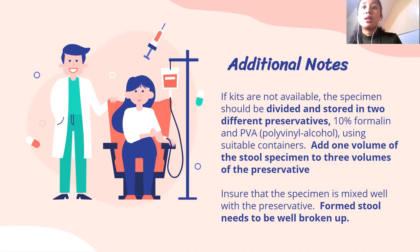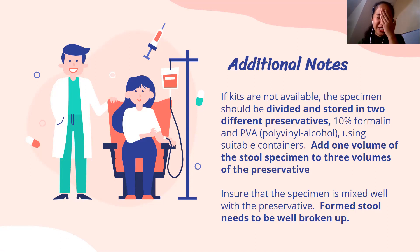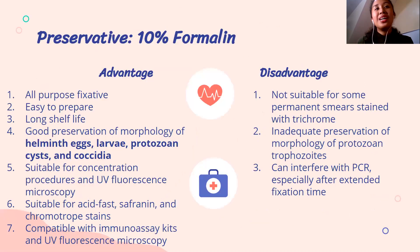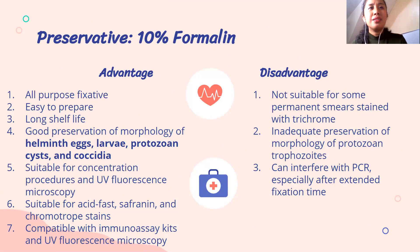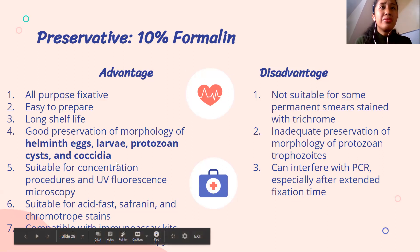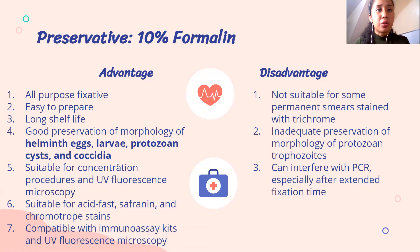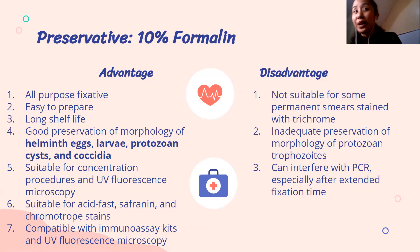Ensure the specimen is mixed well with the preservative — for formed stool, you need to mash and mix it thoroughly with the fixative. We have 10% formalin, which is good for preserving helminth eggs, larvae, and cysts, and is suitable for UV fluorescence microscopy, immunoassays, acid-fast staining, and safranine stains. However, trichrome stain cannot be used with formalin — PVA is used for that. Formalin can also interfere with PCR.